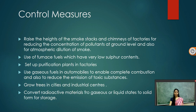Use of gaseous fuels in automobiles ensures complete combustion and reduces the emission of toxic substances. Growing trees in cities and industrial centers is also a control measure, as it helps control the amount of gaseous pollutants present in the atmosphere. We can also convert radioactive materials from gaseous or liquid states to solid states and store them under the sea as a control measure for air pollution.